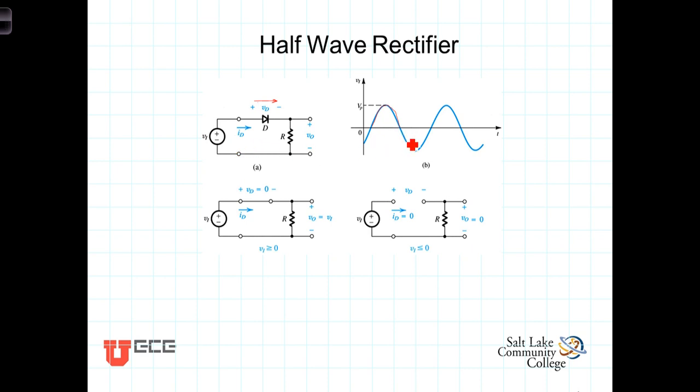But when the circuit, or when the source, reverses its polarity so that the voltage here is less than the voltage on this side of the circuit, the diode won't conduct. It's in a reverse bias mode.